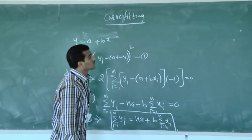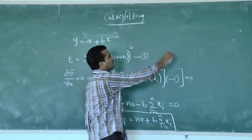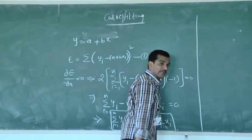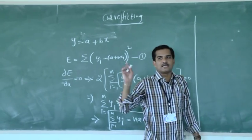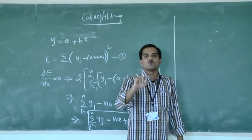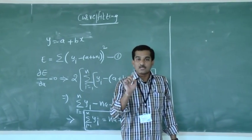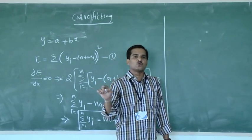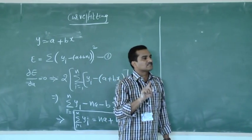This is called the first normal equation to the straight line Y = A + BX. Then again, we differentiate the error E with respect to the other constant B, and equating to zero will give one more equation.